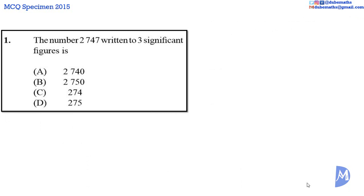Question 1: 2747 to 3 significant figures. The leftmost non-zero digits are the most significant. Thus in this case, the 2, the first 7, and the 4 are the most significant figures.